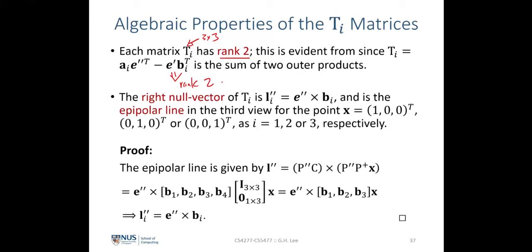In the earlier slides on epipolar lines and epipoles from the trifocal tensor, we saw that the right null space of Ti, where i equals one, two, or three, is the epipolar line in the third view corresponding to the point x equals (1,0,0), (0,1,0), and (0,0,1) in the first view respectively. The epipolar line l'' in the third view is given by the cross product of the epipole e'' and the respective column of the camera matrix P'', where P'' equals [B | b4], with B rewritten as b1, b2, and b3.